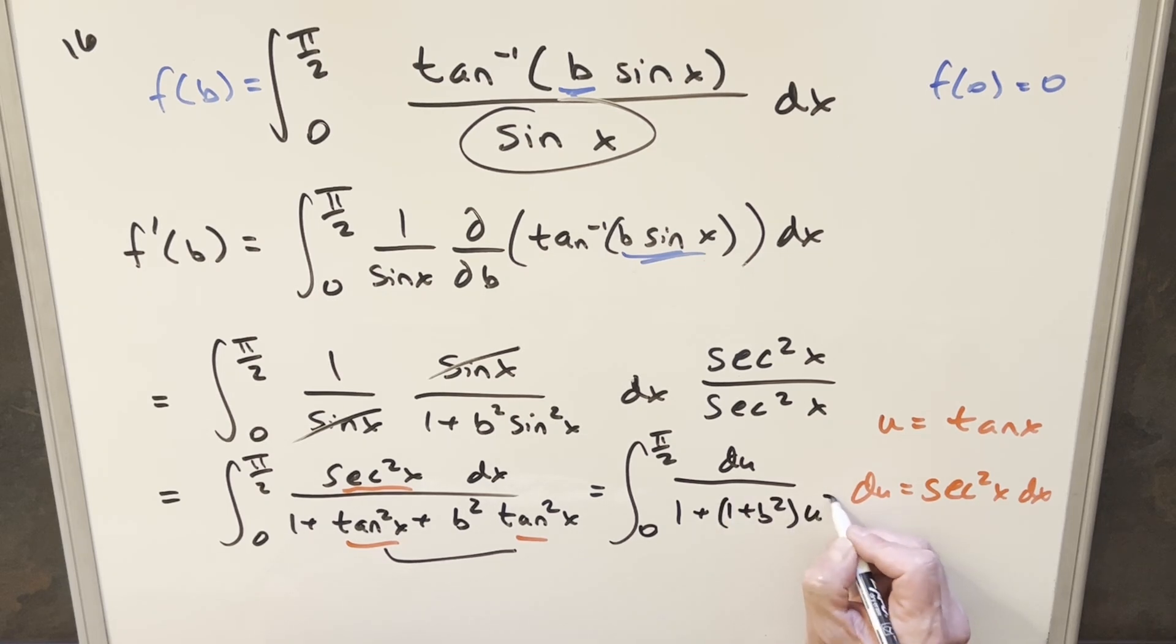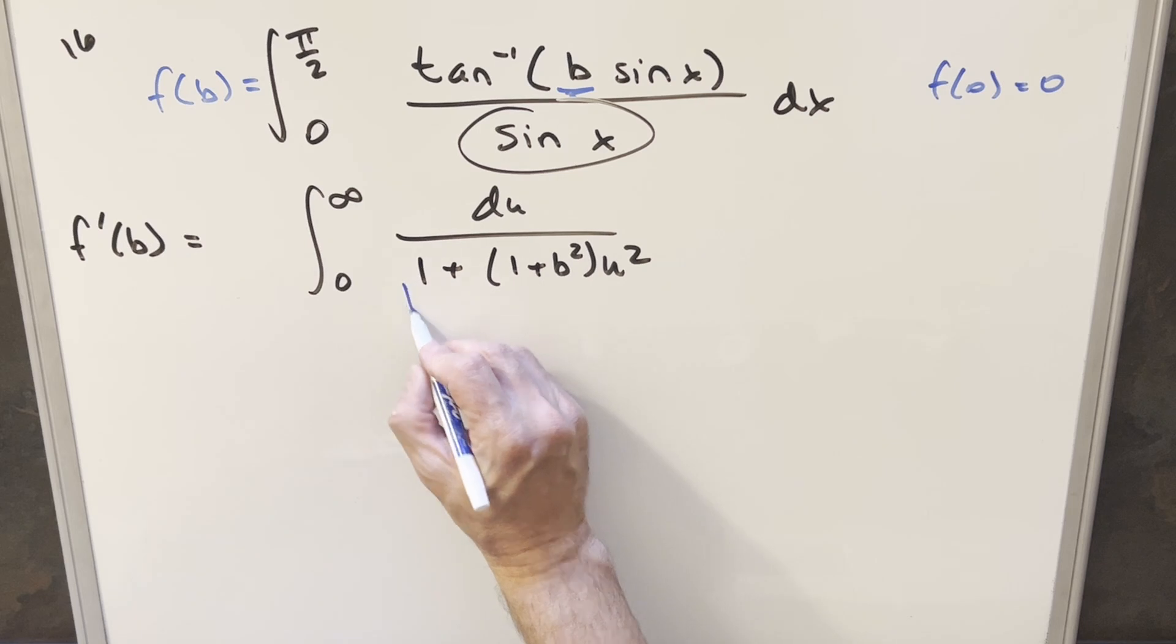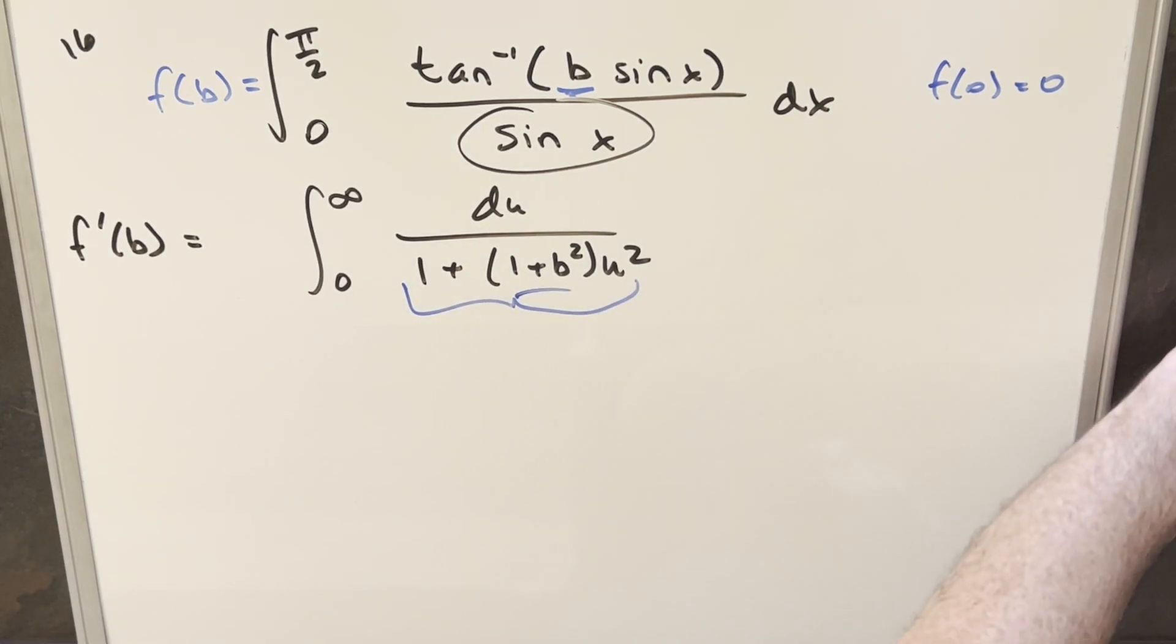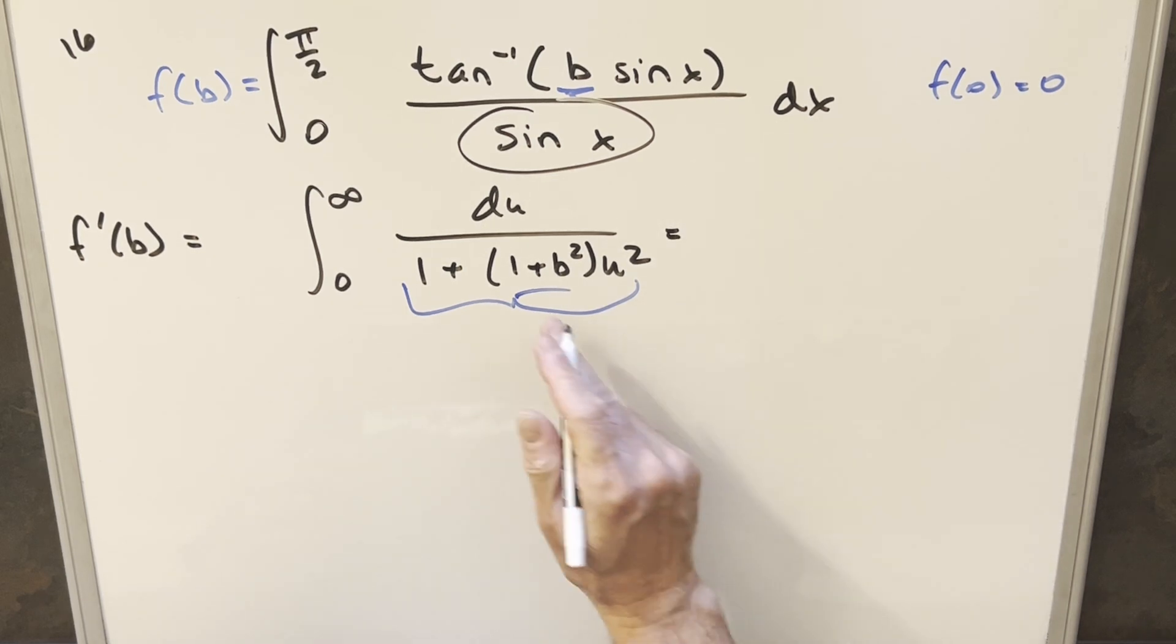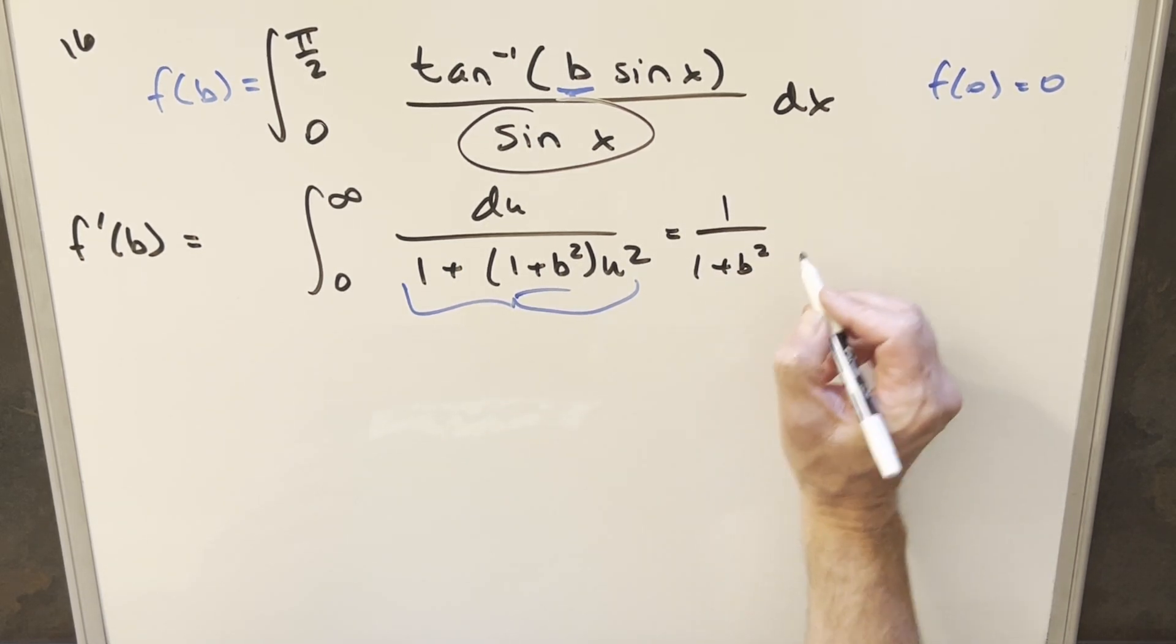We still have this 1 here, and then putting these two together, I can write it as 1 plus b squared times u squared. I forgot to update the bounds here because pi over 2, tan of pi over 2, that's going to be going to infinity. The tan of 0 is still 0. Now from here, this is almost set up to use our arctan formula. We just have this constant in front that we need to deal with. What I can do in this is let's actually factor that out. So if I write this, we'll have 1 over 1 plus b squared in front.